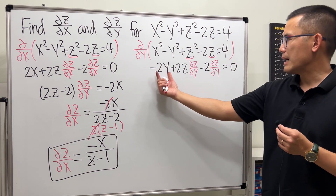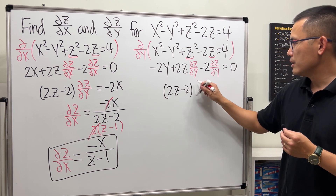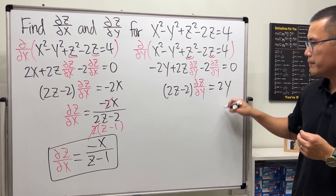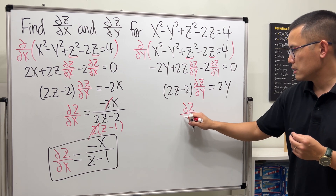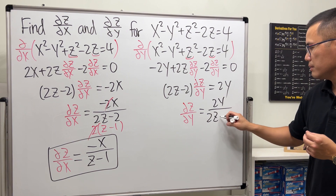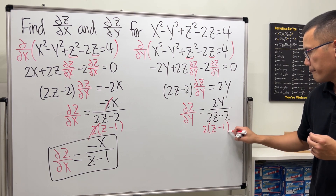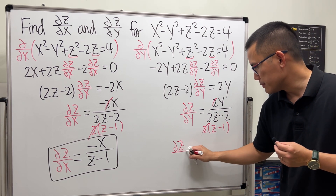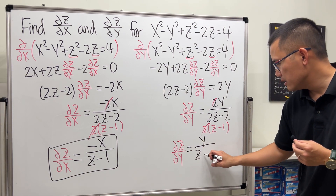Do the same thing — move terms to the other side and factor. We get 2z minus 2 times partial z with respect to y equals positive 2y. Divide to the other side: 2y over 2z minus 2. Factor out a 2 and cancel. Partial z with respect to y is equal to y over z minus 1.